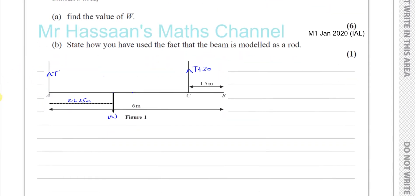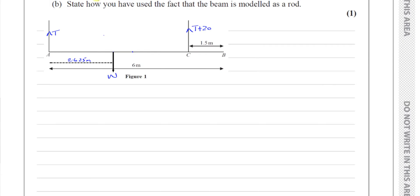Now, we need to find the value of W. So here we have something which is in equilibrium. So we can say that the upward forces and the downward forces, they cancel out or they are equal to each other. So we can say that the upward forces is T plus T plus 20. And that gives us W. That's the only downward force. So we can say 2T plus 20 is equal to W. Okay, that's one equation.